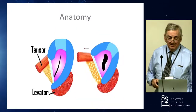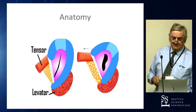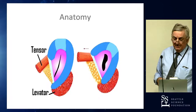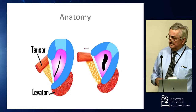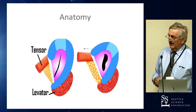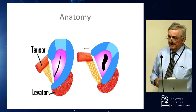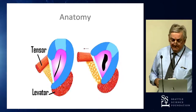How does it all work? It's obviously the tensor muscles that open up the tube. This comes on with swallowing, usually from a voluntary movement of those muscles.